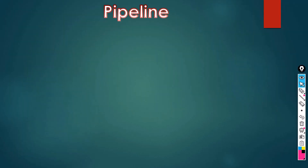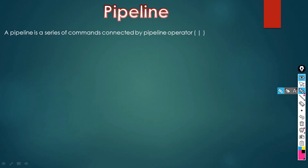So what is a pipeline? A pipeline is essentially a character, an operator, which combines two different commands. This particular character, which is right above the shift key on a US keyboard, combines two different commands together. How the combining works and what exactly it means is what we are going to see in this video.